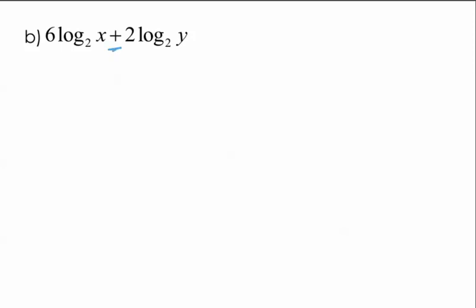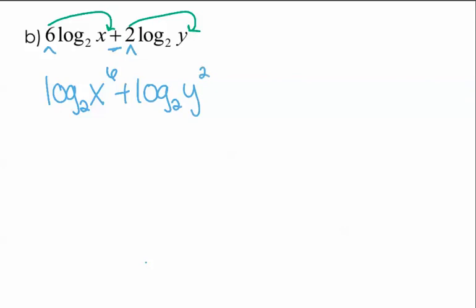This next one is a little more complicated — we still only have two terms, and they're both log base 2, so we can do this problem. We have addition, so we'll end up multiplying, but we also have coefficients. The first thing is to take care of those coefficients by making them into exponents using the power property. Rewriting: log base 2 of x to the sixth plus log base 2 of y squared. Now with no coefficients, we combine via addition: log base 2 of x to the sixth times y squared. We're done — no more coefficients, no addition or subtraction signs, and log is written only one time.